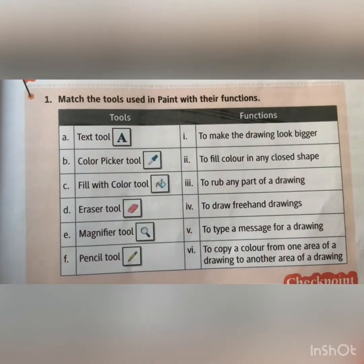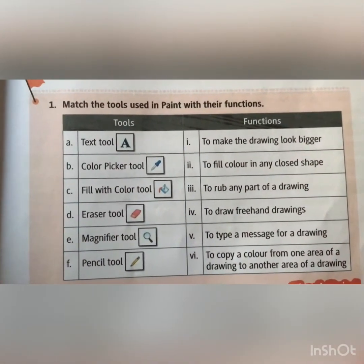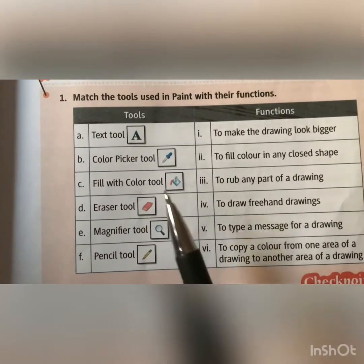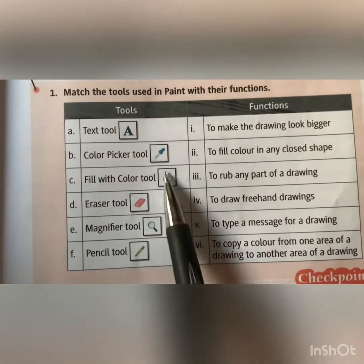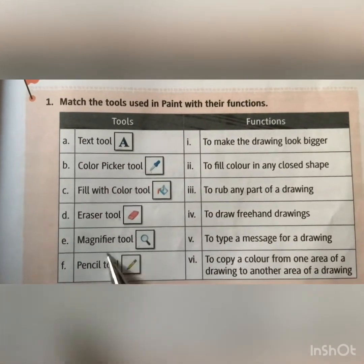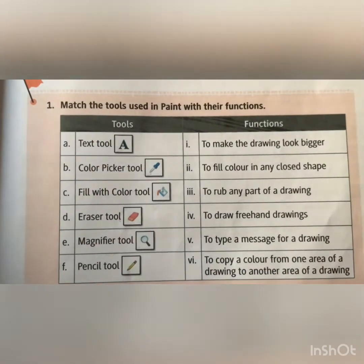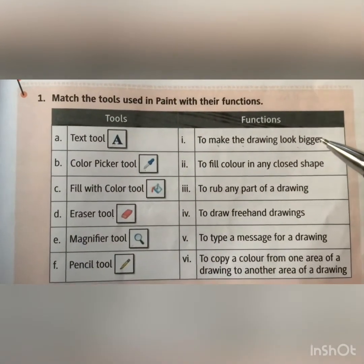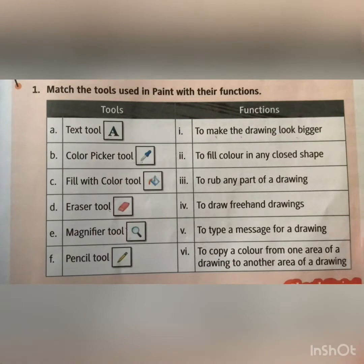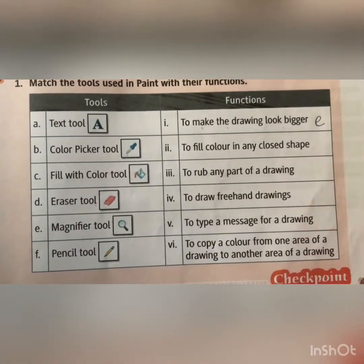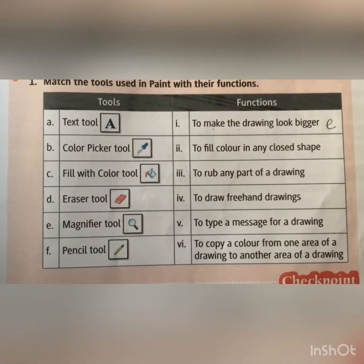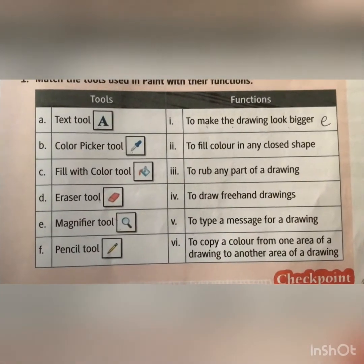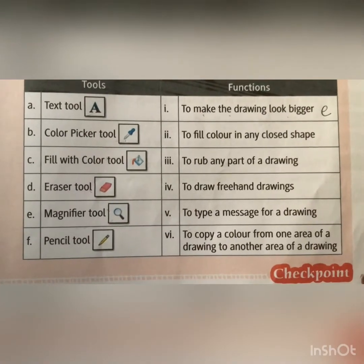Match the tools used in paint with their function. As I have told you all these functions, we have to match them: text tool, color picker, fill with color tool, eraser tool, magnifier tool, and pencil tool. To make the drawing look bigger, we use the magnifier — answer E. To fill color in any closed shape, we use the fill with color tool — answer C.